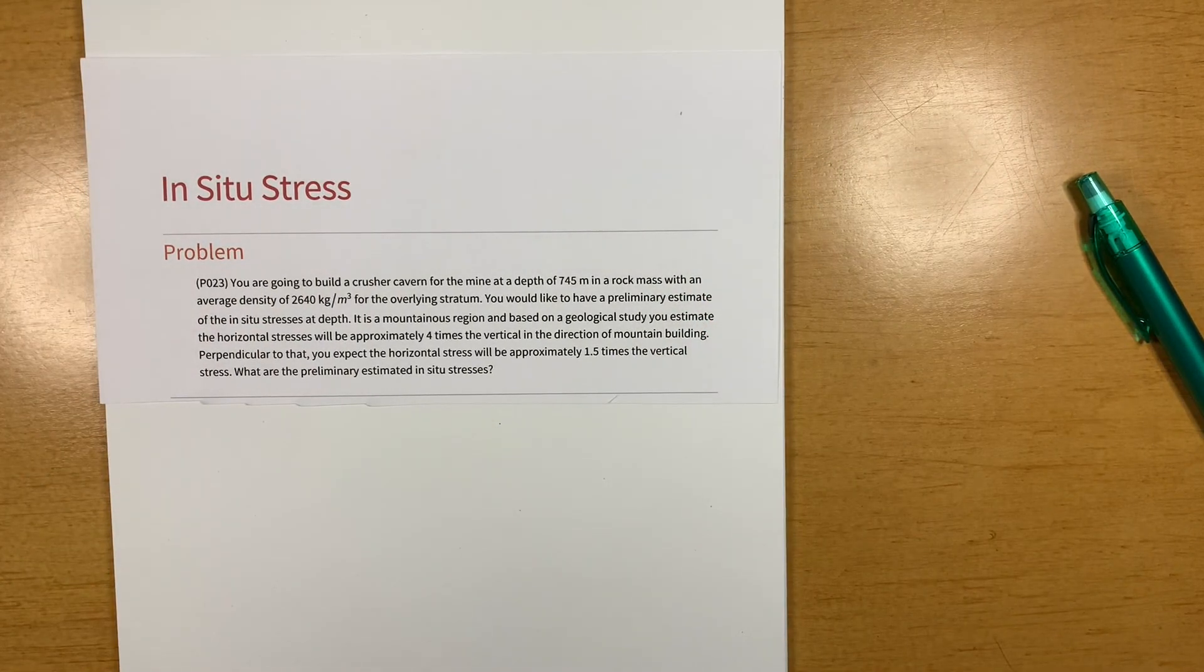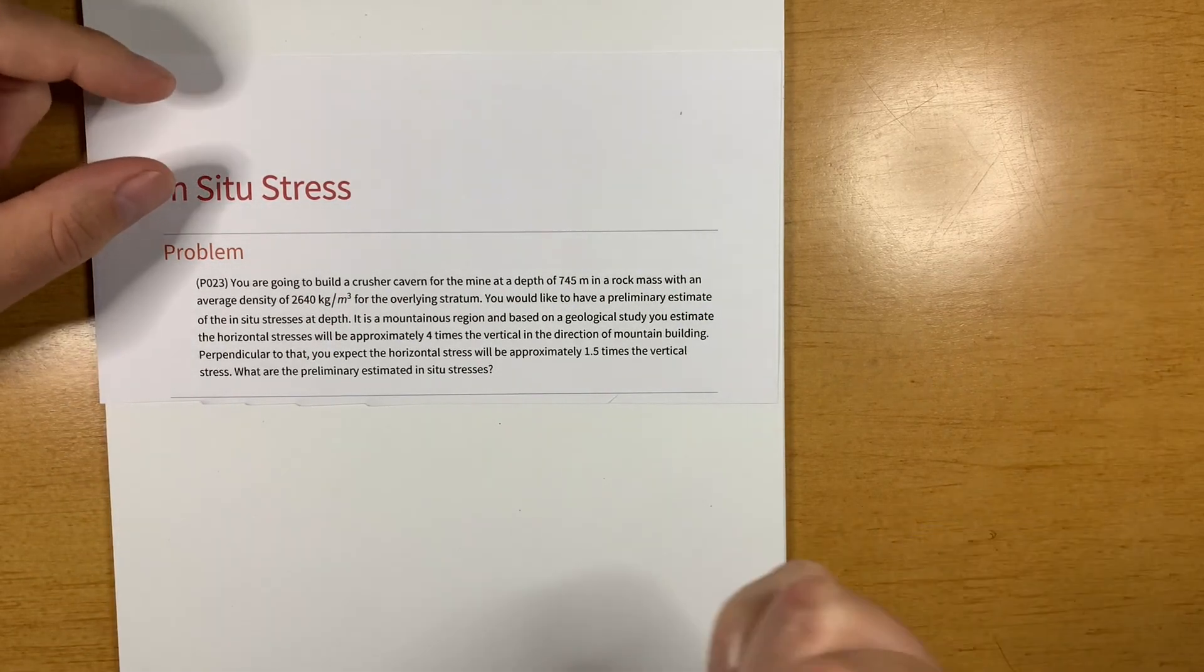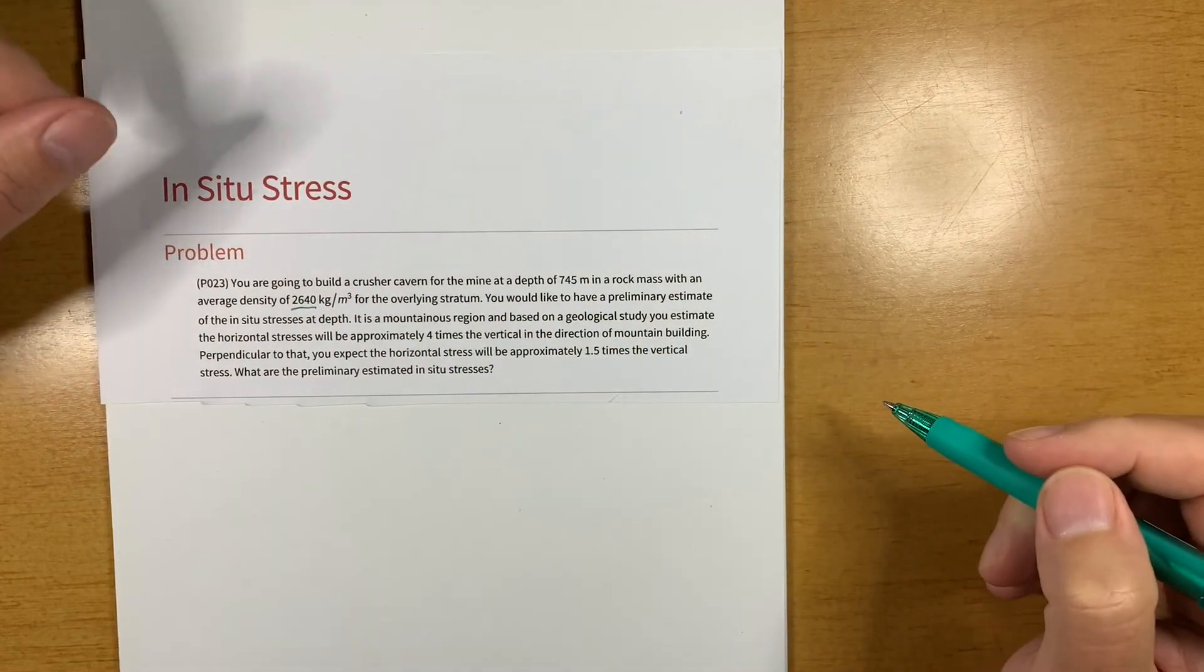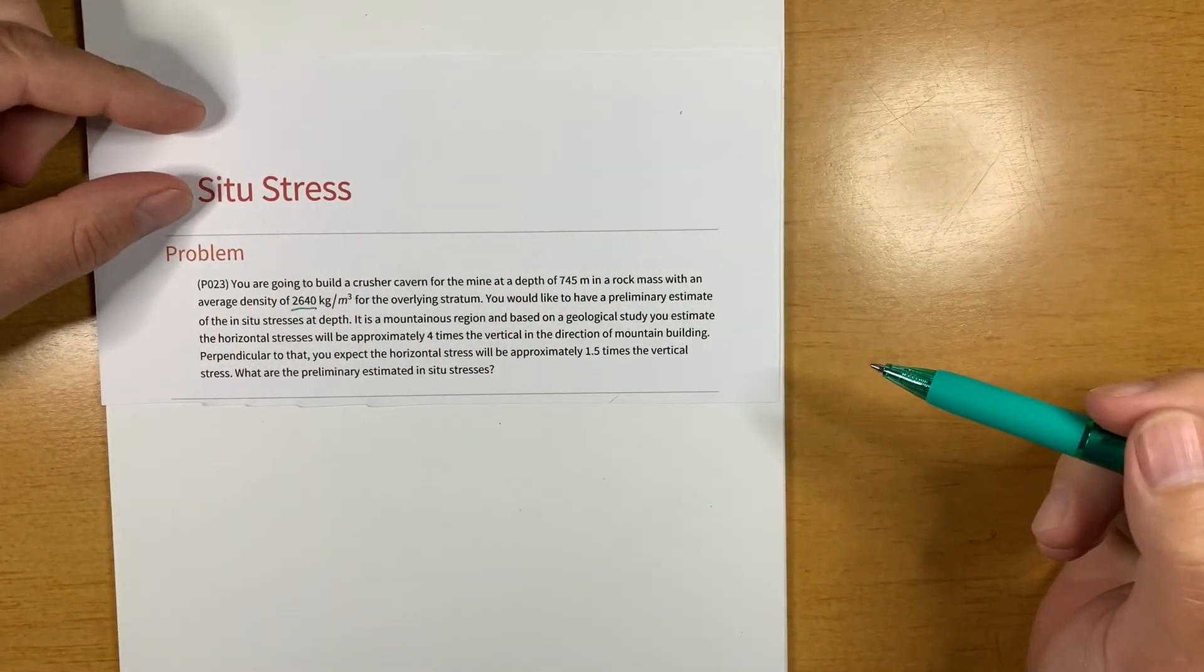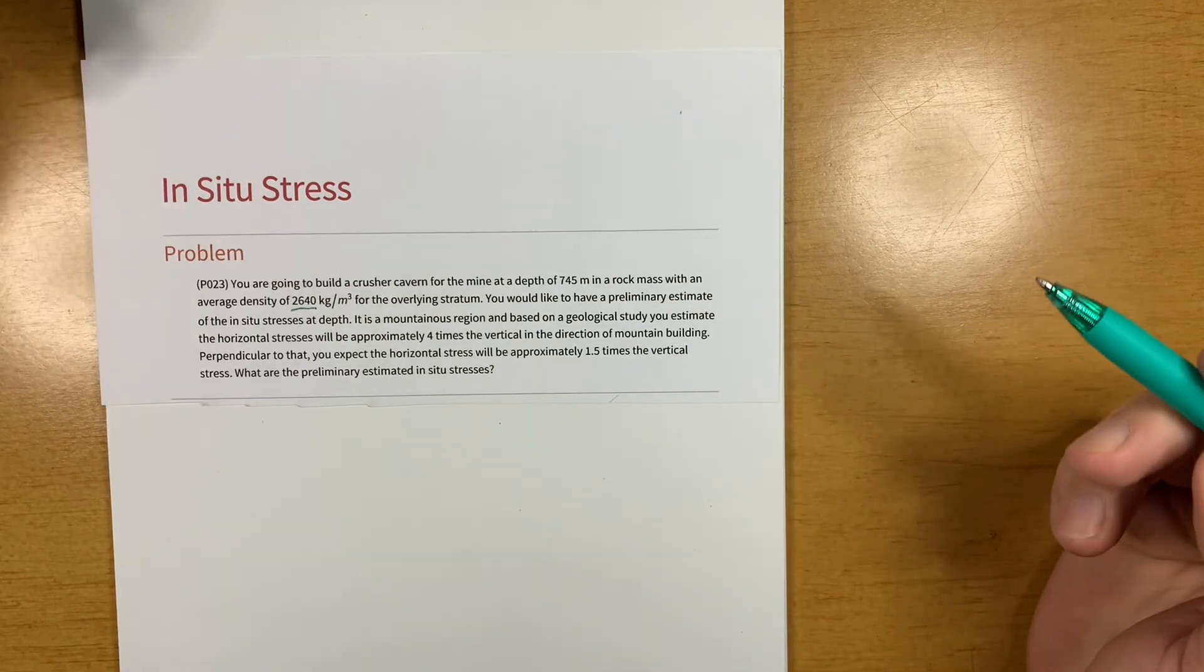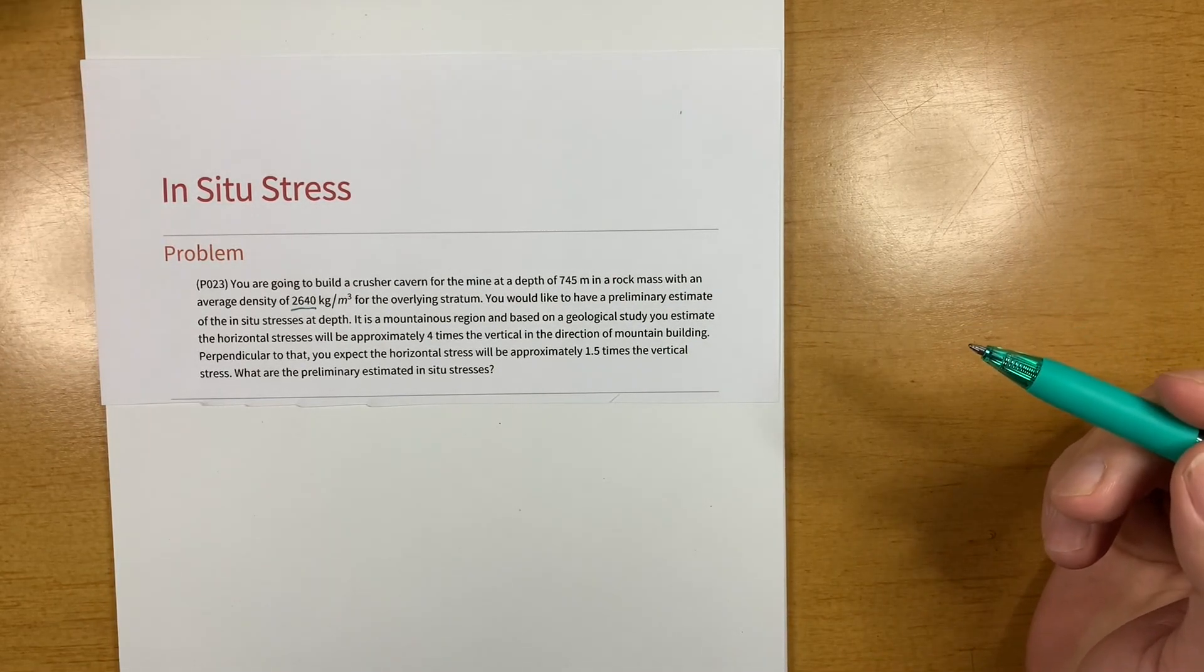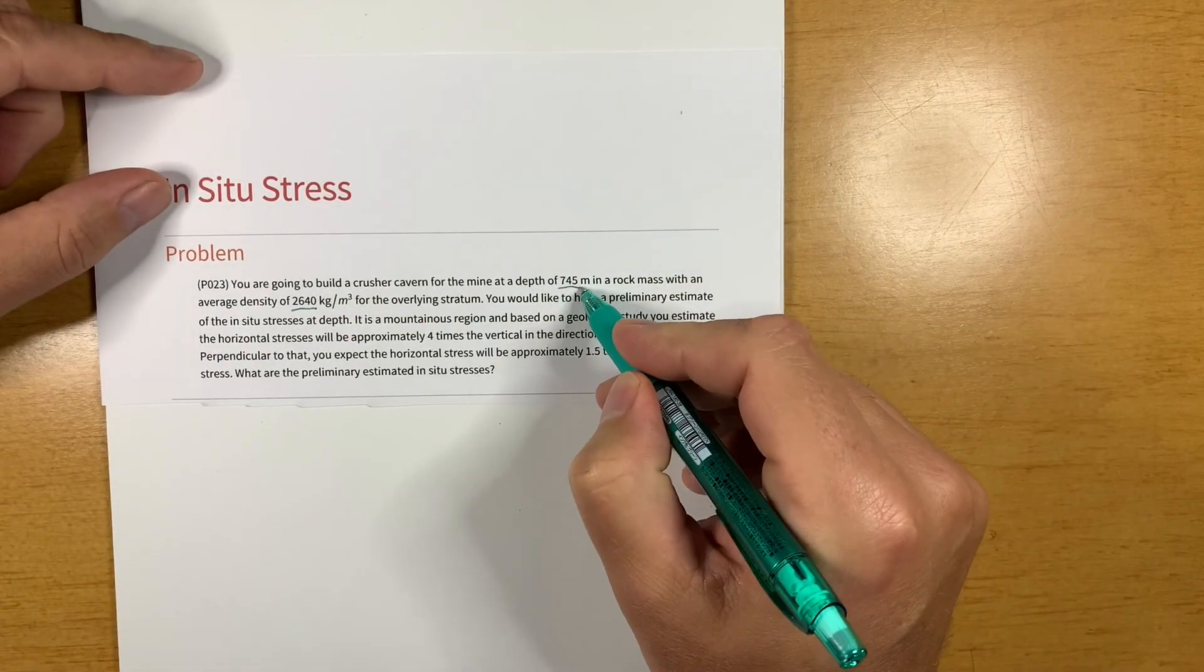You're going to build a crusher cabin for the mine at a depth of 745 meters in a rock mass that has an average density of 2640 kilograms per cubic meter for all the overlying strata. You want to have a preliminary estimate of the in situ stresses at depth 745 meters.